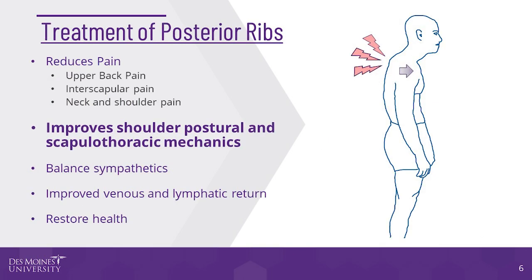Pain and dysfunction related to posterior ribs commonly results in a protracted scapula with an anterior shoulder posture, which leads to dysfunctional scapulothoracic mechanics. It is frequently implicated in rotator cuff syndromes and other common painful conditions of the shoulder, head, and neck. Therefore, treatment of posterior rib somatic dysfunction can be significantly beneficial for upper back, neck, and shoulder pain as well as headaches.